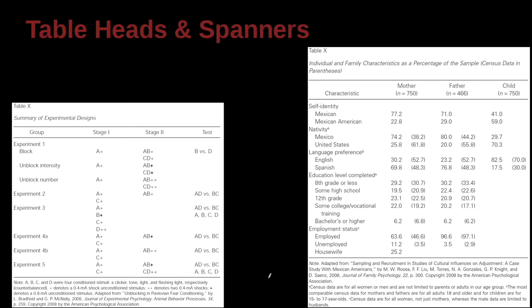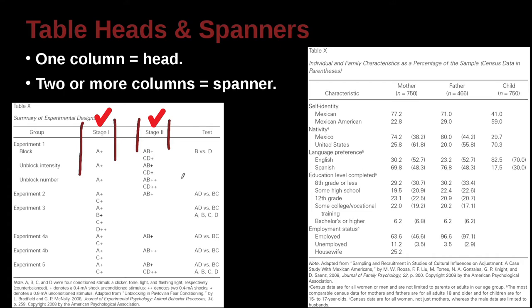Let's look at table headers and spanners. So here we have this idea of the one column, one head. Very straightforward. So here we have this example here. This is a column, and that's stage one. This is a column, that's stage two. That is really straightforward and easy to understand.